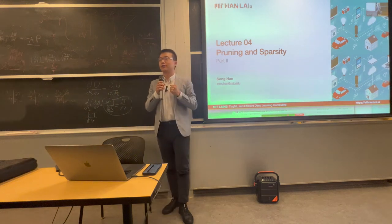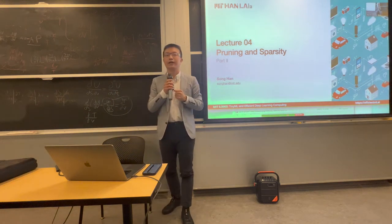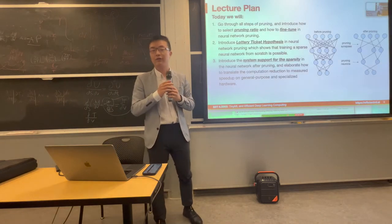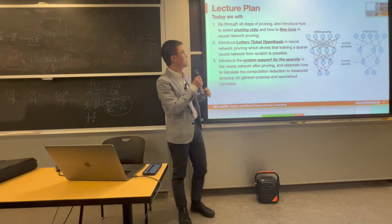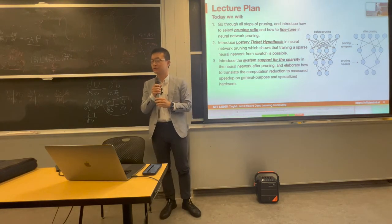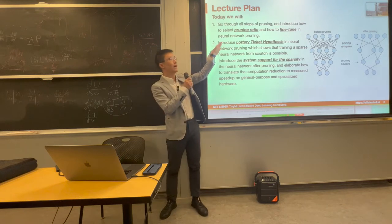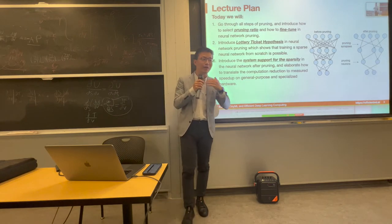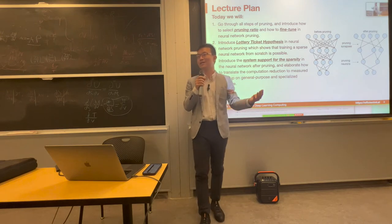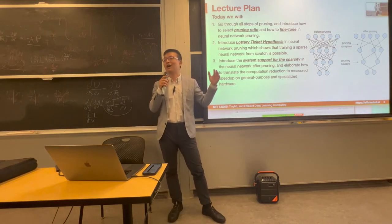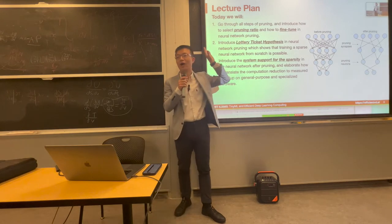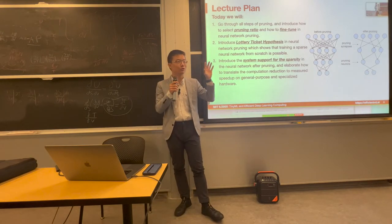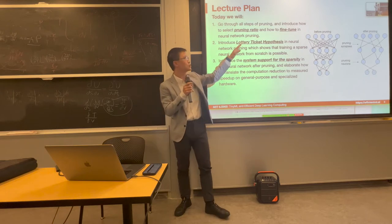Today we are going to continue the discussion about pruning and sparsity. In the last lecture, we covered the basics of pruning. In this lecture, we are going to cover more advanced topics. The first topic is how do you select the pruning ratio? Deep neural networks have many different layers — VGG has 16 layers, ResNet-50 has 50 layers. Are all the layers equal? That's actually not the case.